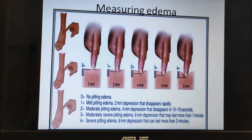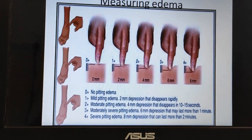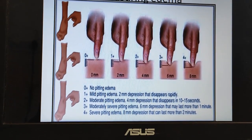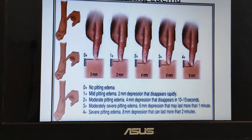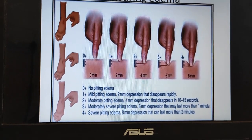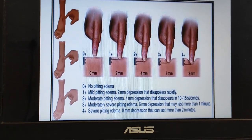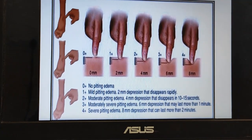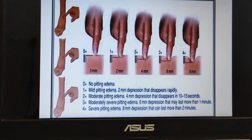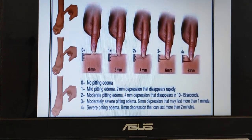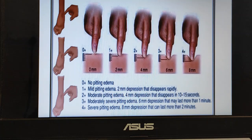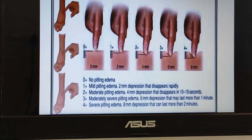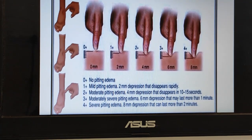Edema can be measured using a grading scale. 0 plus indicates no pitting edema. 1 plus is mild pitting edema with a 2 mm depression that disappears rapidly. 2 plus is moderate pitting edema with a 4 mm depression that disappears in 10 to 15 seconds. 3 plus is moderately severe pitting edema with a 6 mm depression that may last more than 1 minute. 4 plus is severe pitting edema with an 8 mm depression that can last more than 2 minutes.